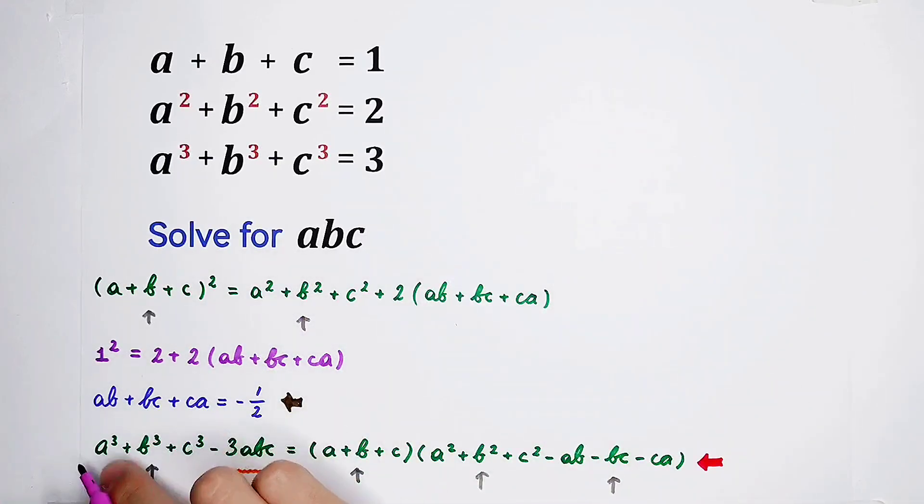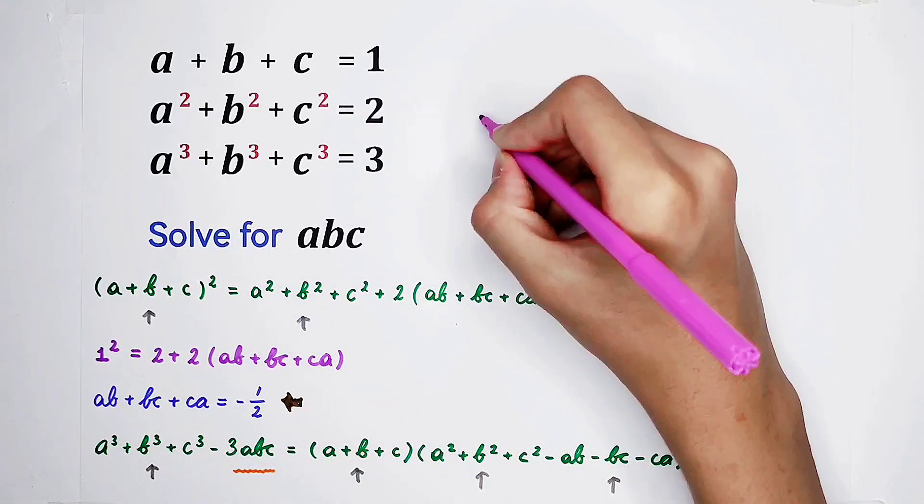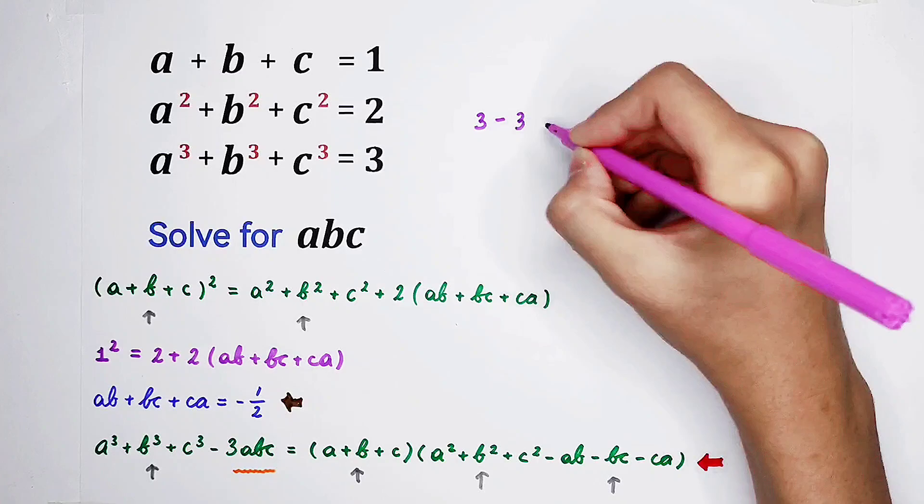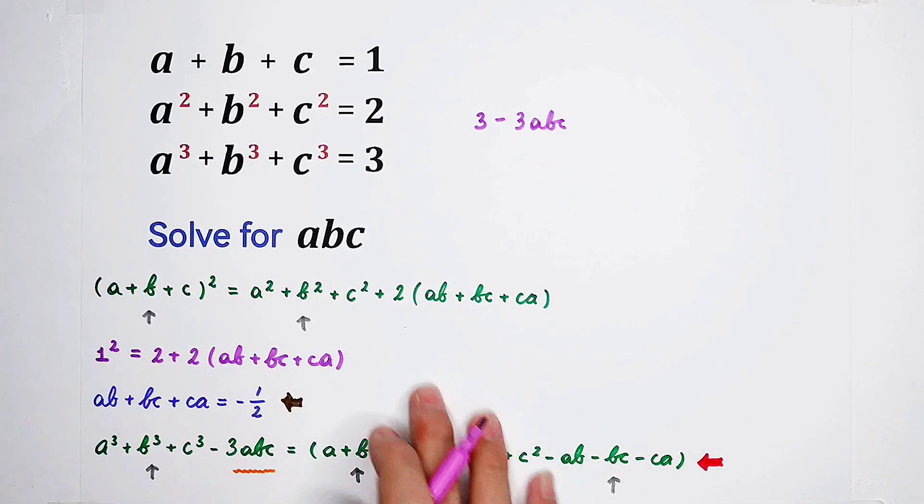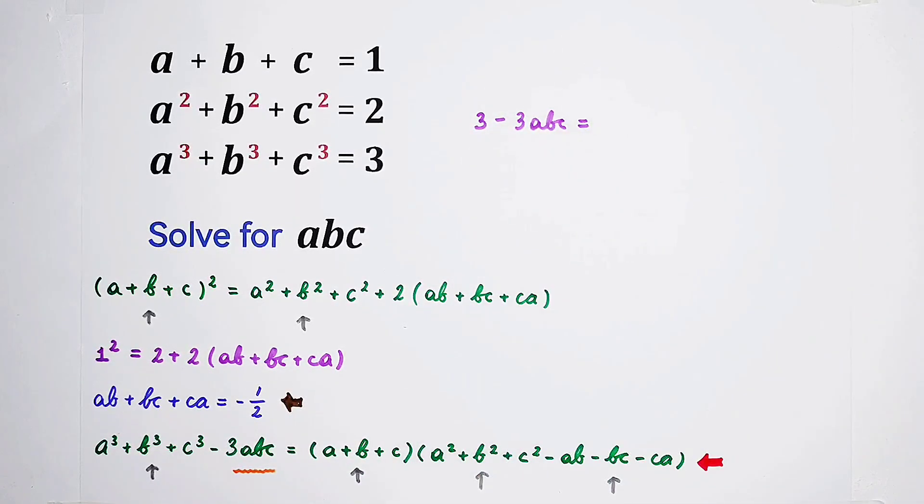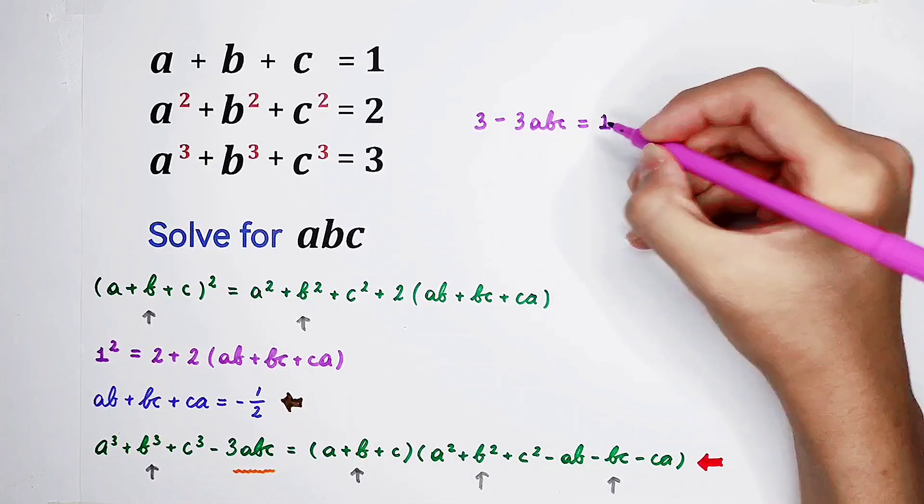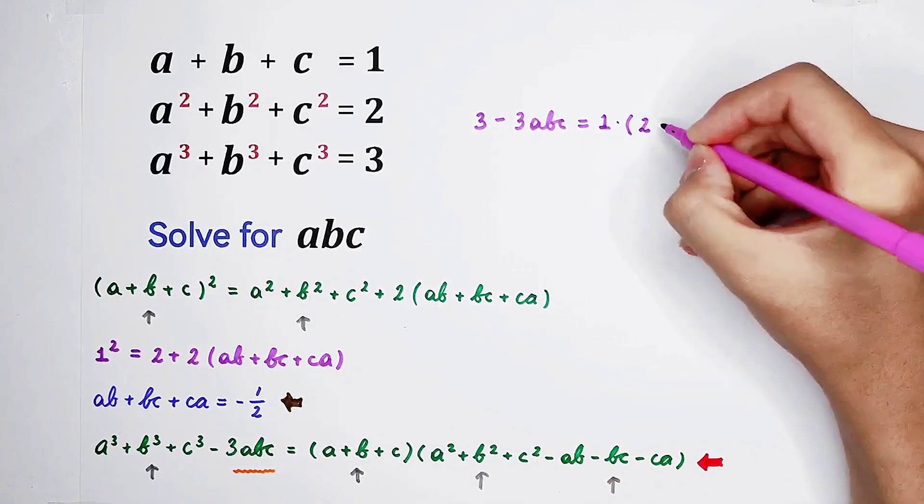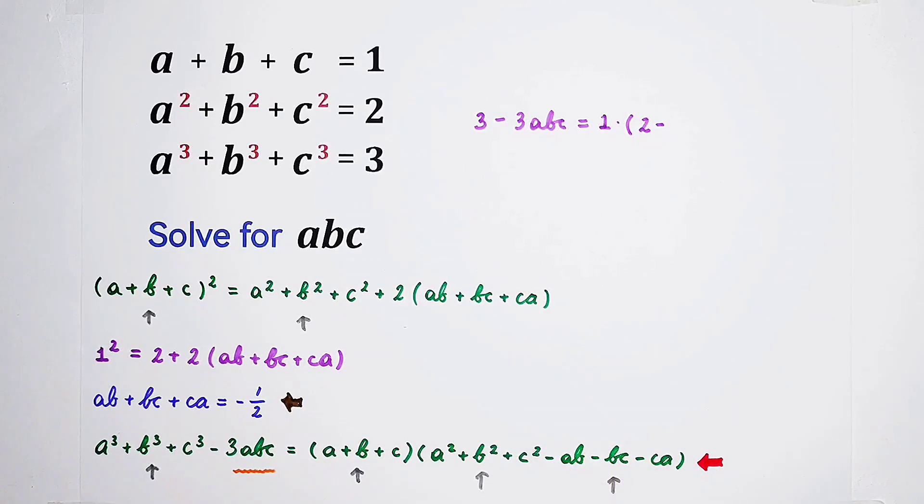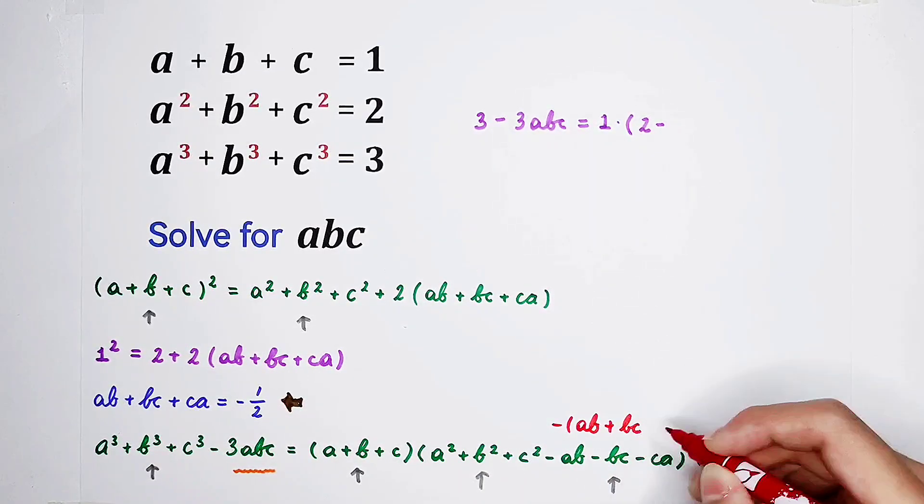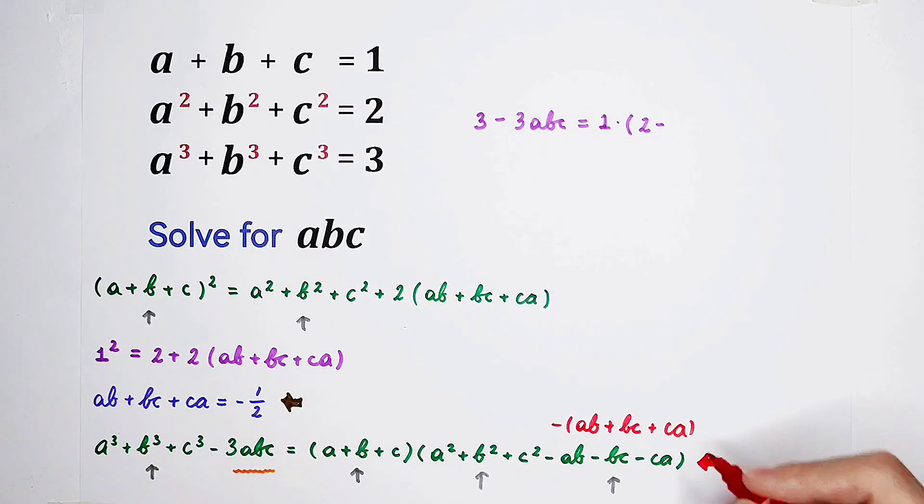So, I'm going to write it here. Here is 3, minus 3 times ABC. ABC, we don't know. So, we have to regard this equation as an equation about ABC. The right hand side, a plus b plus c is 1. Then times a squared plus b squared plus c squared is 2. Minus, if I take out a negative sign, in the bracket, it is AB plus BC plus CA.